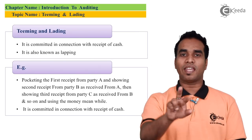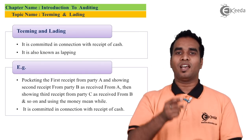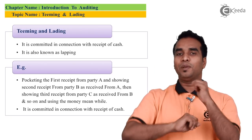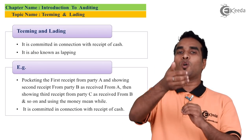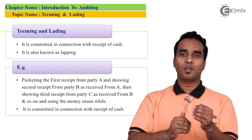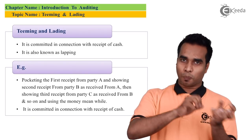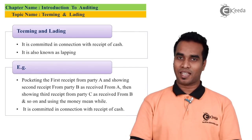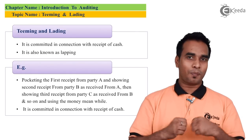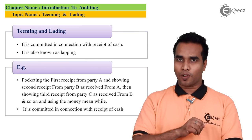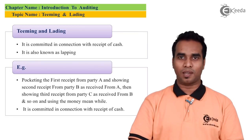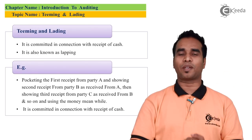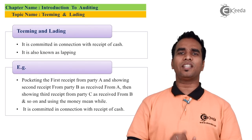Now customer B comes and pays 500 rupees. That 500 rupees from B is credited to the account of A. Then customer C comes and purchases a product and pays. B's account is credited using C's payment. Then D's payment is used to credit C, and these things keep going on.